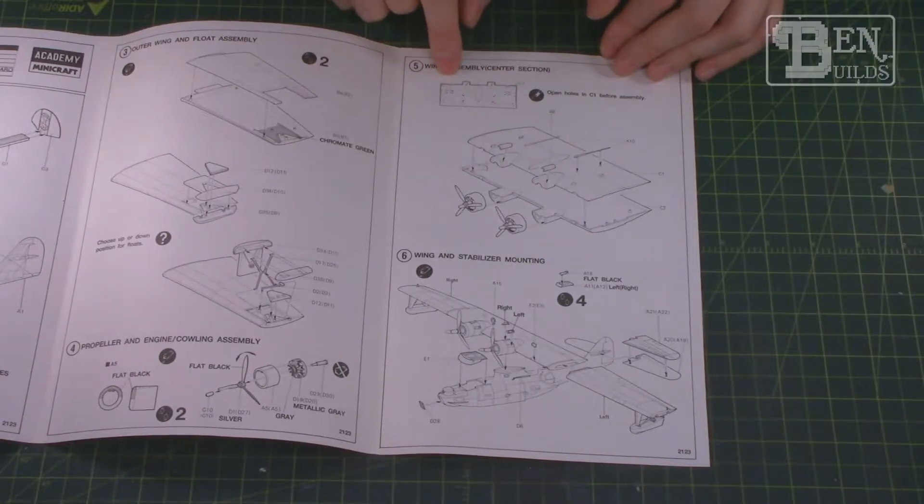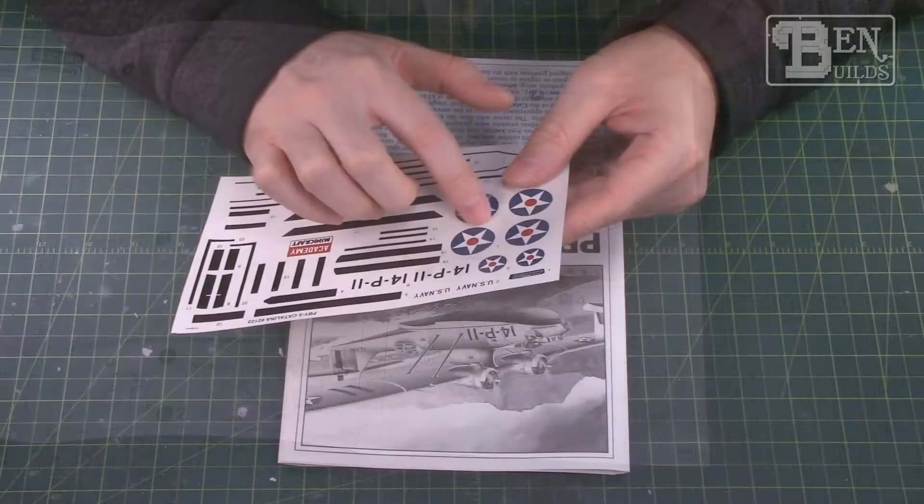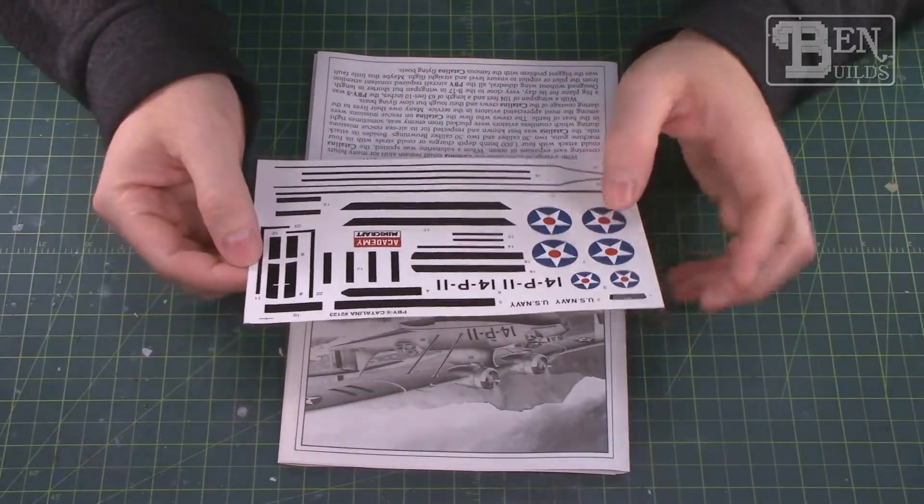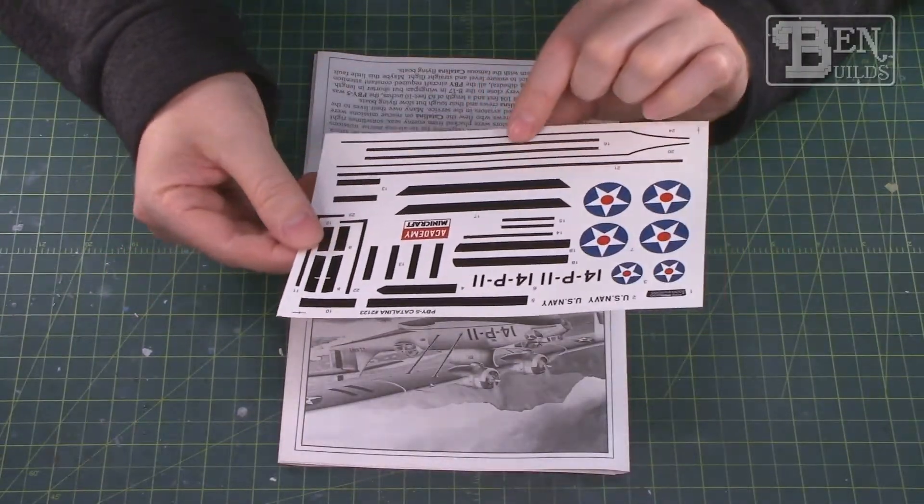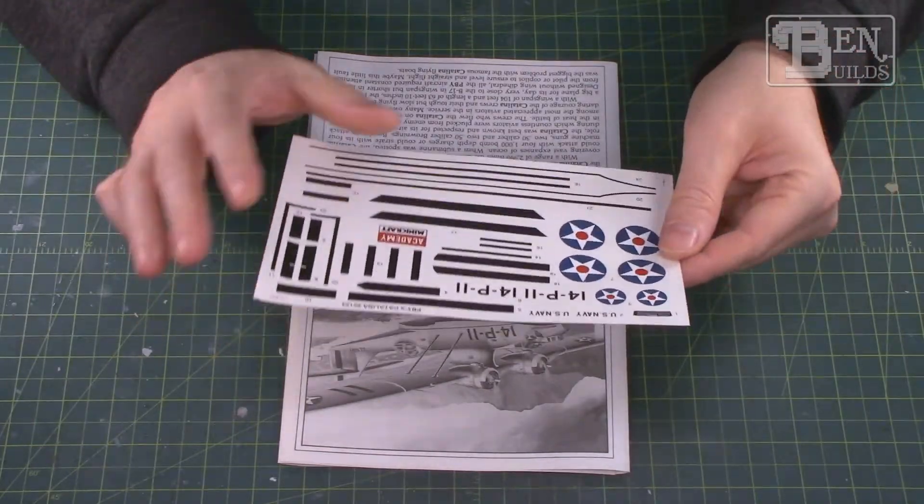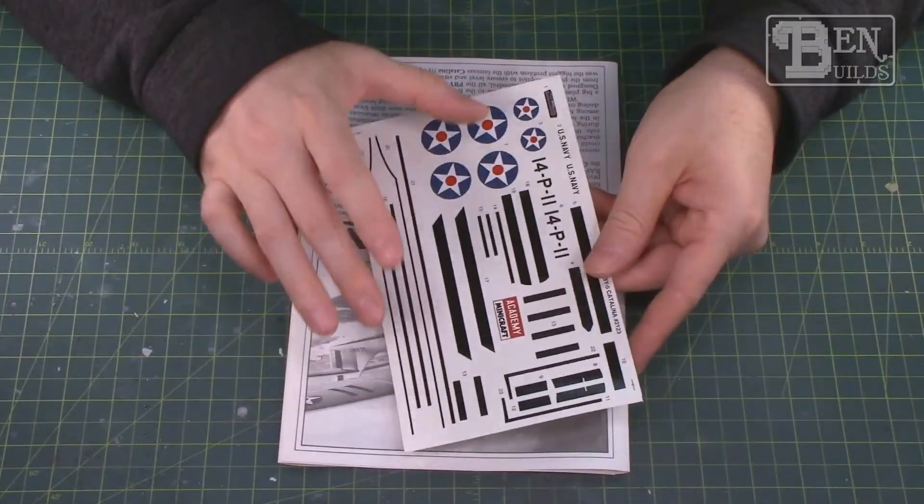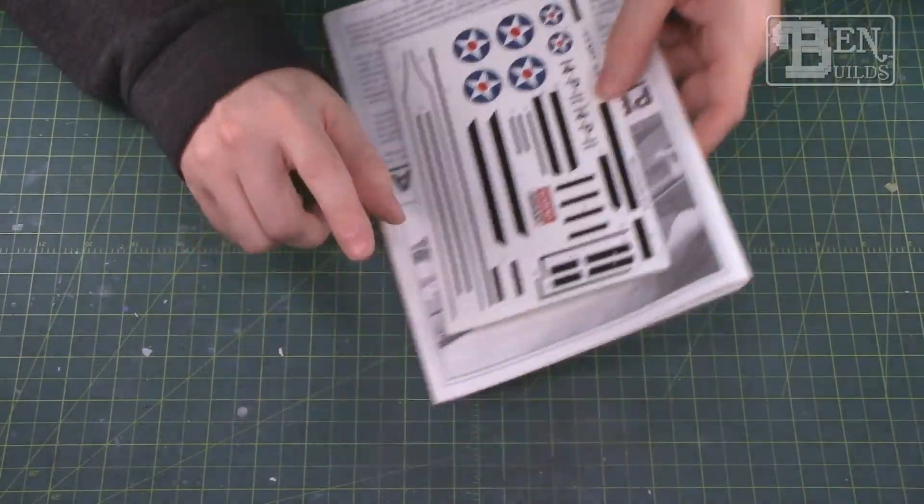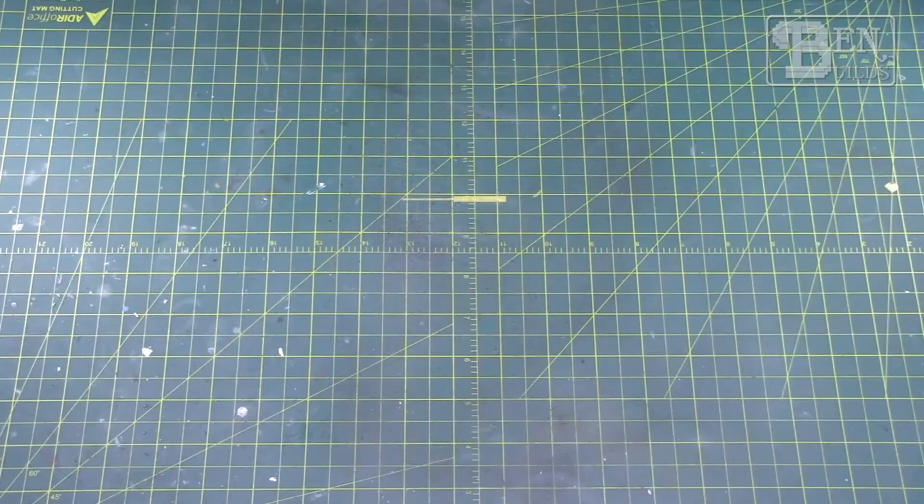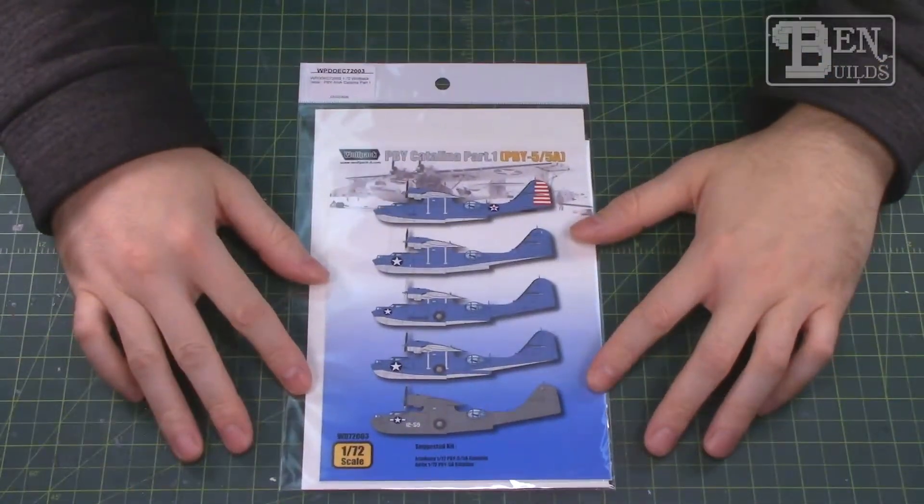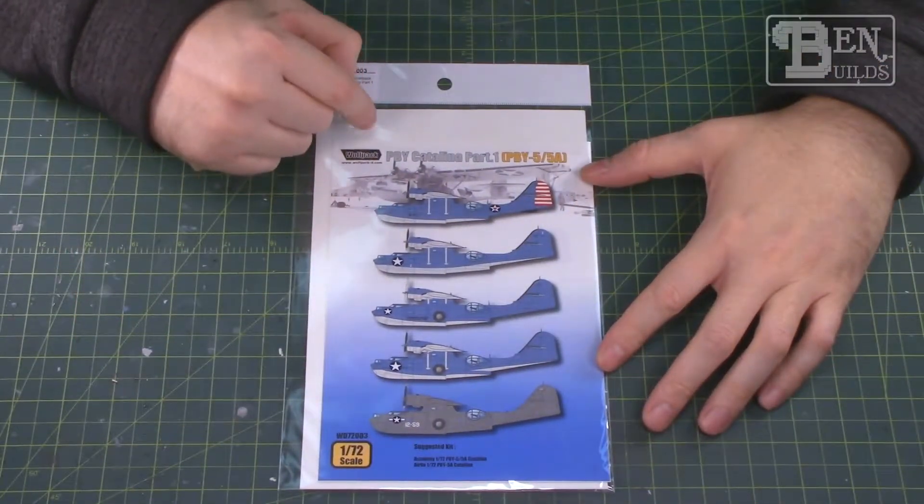But we'll get on that a little bit later when we actually get into building. Now for the decals, of course we have one sheet of decals and they look okay. They are a little on the thick side and they do have quite a bit of flash around the outside of the decal, so that would have to be trimmed off if I intend on using these. But I actually have a different idea for those decals, and that is to use this set right here.